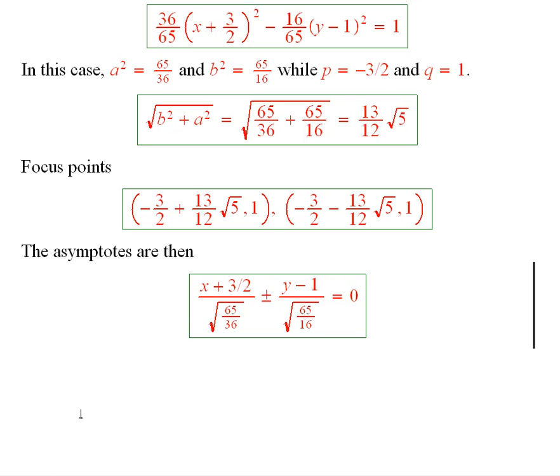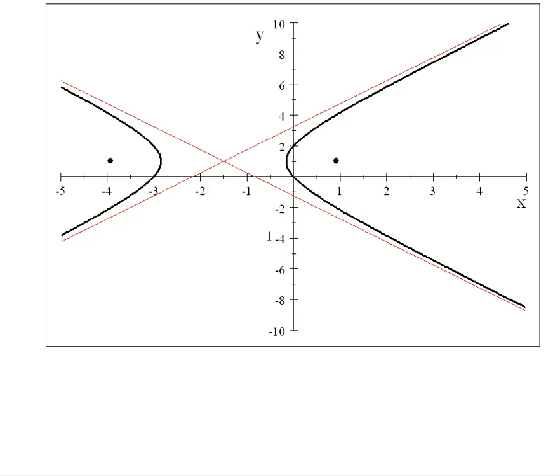So what does the graph look like? The graph looks like this. You see these red lines? Those are the asymptotes. And then these are the focus points right here which were determined above.